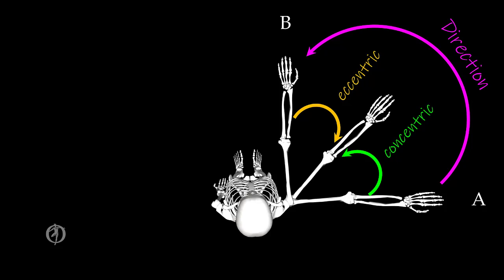Another way we can think about these speeding up and slowing down phases is as concentric and eccentric phases of the movement. During the concentric phase, the arm is going to speed up, and during the eccentric phase, the arm is going to slow down. Recall from the muscle control formula that muscles on one side of the axis of rotation are shortening while muscles on the opposite side are lengthening. The muscles that are anterior to our axis of rotation are going to be shortening — these are our horizontal adductors. The MTCs on the opposite side are going to be lengthening; in this case, these are going to be our horizontal abductors or horizontal extensors.